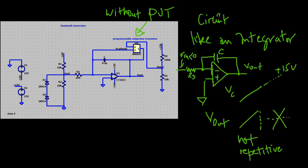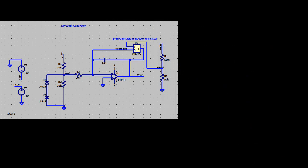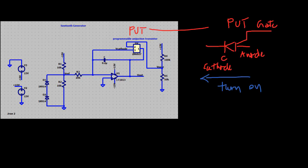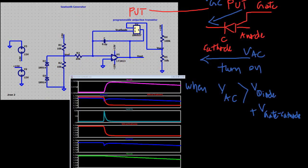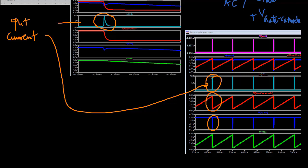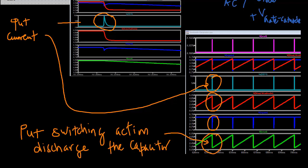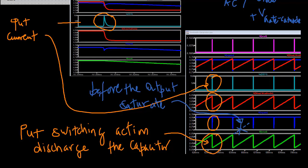It would not generate a repetitive triangular wave. In order to generate a repetitive waveform, we must now include the PUT. The PUT introduces oscillation into the circuit by acting as an active switch that turns on when the anode to cathode voltage is greater by one diode drop than its gate to cathode voltage. The PUT will remain on until the current through it falls below the minimum holding current rating. This switching action acts to rapidly discharge the capacitor before the output saturates.